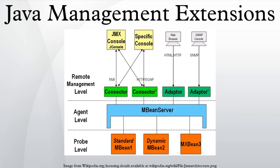A connector provides full remote access to the MBean server API using various communication protocols, while an adapter adapts the API to another protocol or to a web-based GUI. Applications can be generic consoles or domain-specific applications. External applications can interact with MBeans through the use of JMX connectors and protocol adapters. Connectors serve to connect an agent with a remote JMX-enabled management application, involving a connector in the JMX agent and a connector client in the management application. Protocol adapters provide a management view of the JMX agent through a given protocol, and management applications that connect to a protocol adapter are usually specific to that protocol.